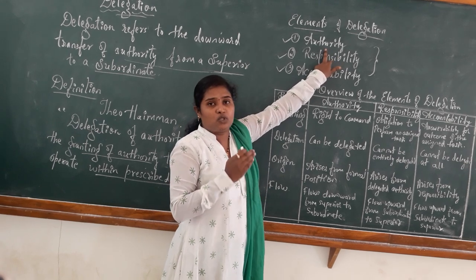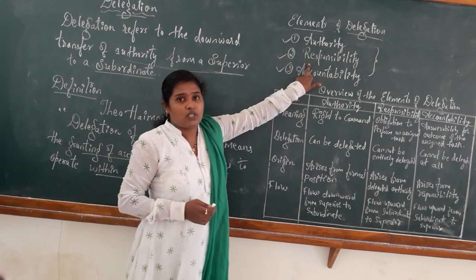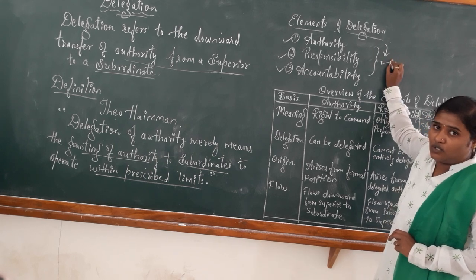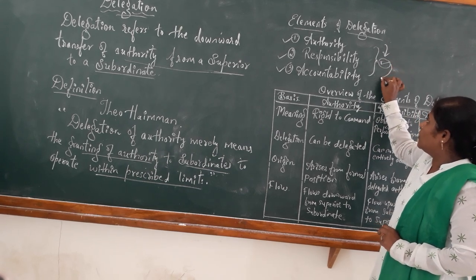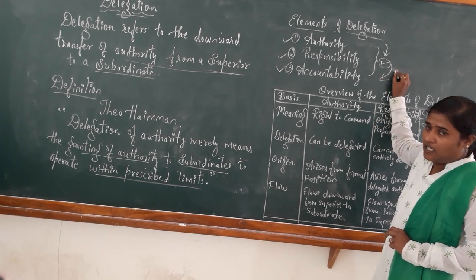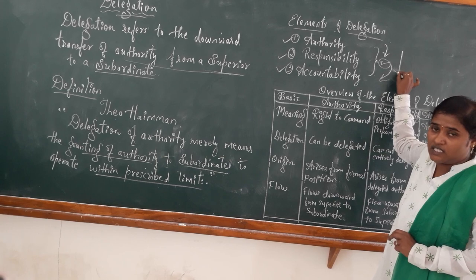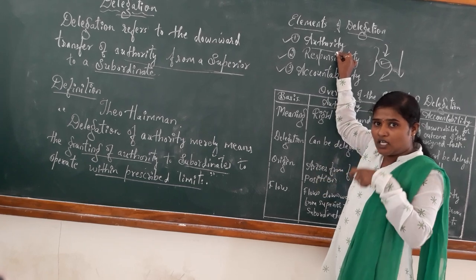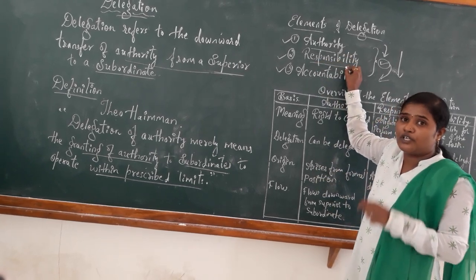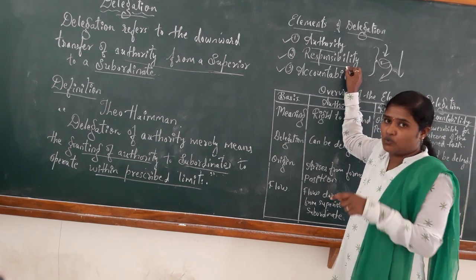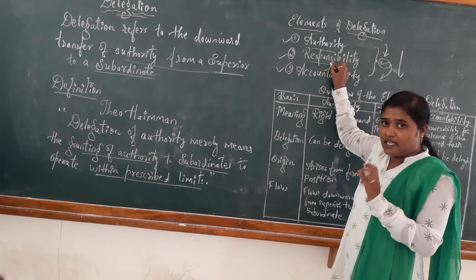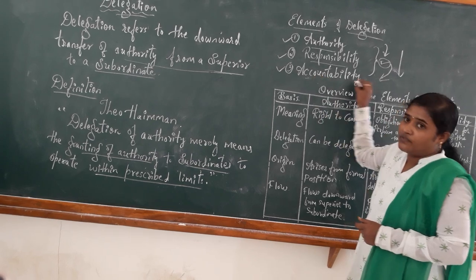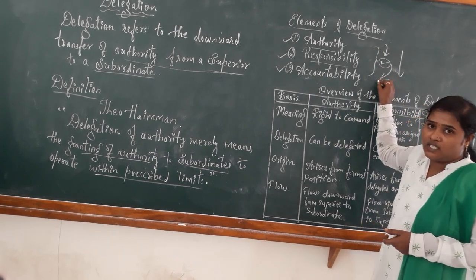The authority is to be transferred from the superior to the subordinates. The second is responsibility — it is one of the processes in delegation. After transferring the authority, the subordinates must have a particular response to whatever task is assigned to them. After assigning the task, the task must be presented with accountability. Accountability is the result of the assigned task.